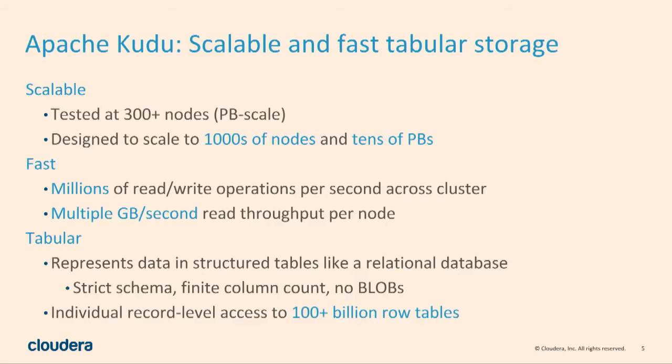Kudu is trying to be this middle ground that's pretty good for everything, making your application architecture much simpler, because we can do both analytic data operations like HDFS can and low-latency single row operations more like HBase. The elevator pitch is scalable, fast, tabular storage. Scalable meaning we've tested multi-hundred node clusters. Comcast gave a talk recently about a cluster that's around 350 or 400 nodes. The design is meant to scale to the same kind of sizes as other Hadoop ecosystem components — talking thousands of nodes. We haven't tested a thousand-plus nodes yet, but the design should scale.